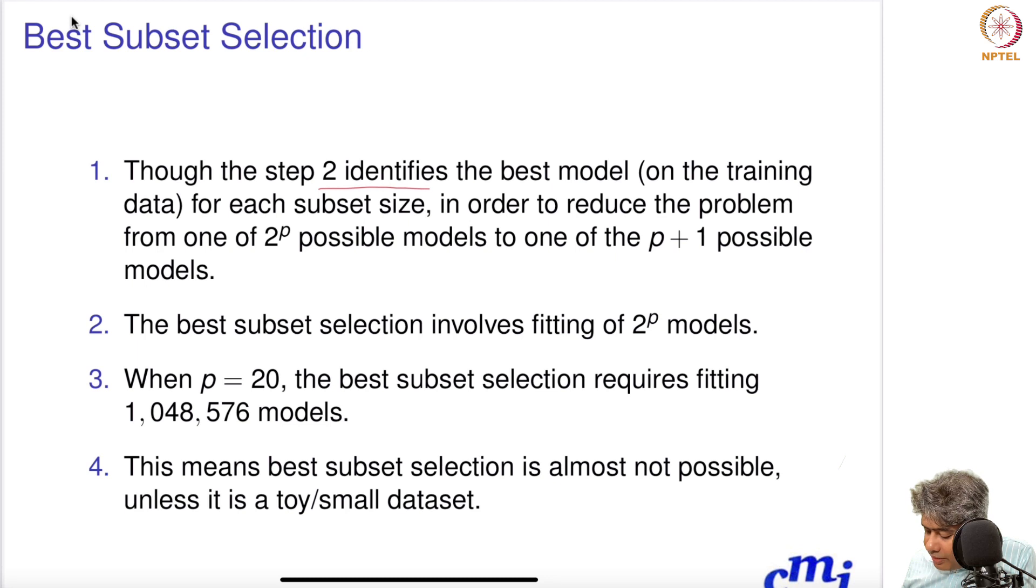Though step two identifies the best model on training data of each subset in order to reduce the problem from one of 2^p possible models to one of p+1 possible models, the best subset selection involves fitting 2^p models, which could be very difficult. If you choose p = 20, best subset selection requires fitting 1,048,576 models. And p = 20 is very small—in today's world, p = 20 is very modest, really. Any data set can have 20 features.